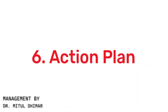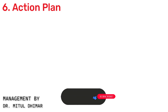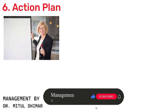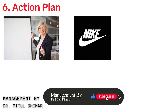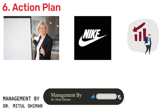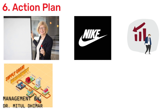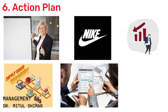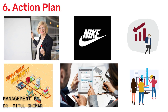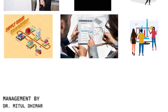Stage 6: Action Plan. Finally, let's talk about action planning with an example from Nike. After facing backlash for its supply chain practices, Nike developed an action plan to improve labor conditions and sustainability efforts.